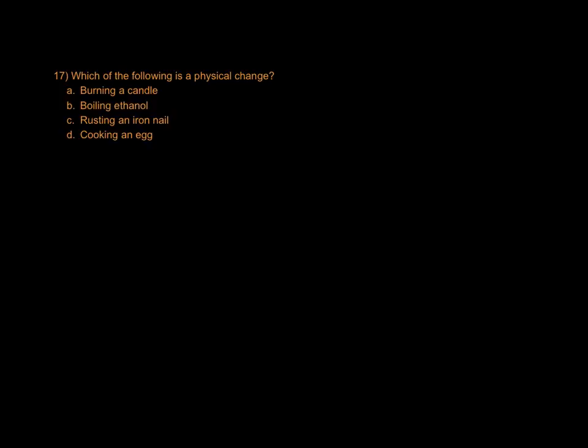A physical versus a chemical change. Physical means it doesn't alter the substance itself whereas a chemical results in new substances. So burning is always a chemical change. Boiling, any change of state, boiling, freezing, melting, condensation, all of those are physical changes. Rusting is a chemical reaction between metal and air. Cooking an egg changes the chemical composition of the egg itself.